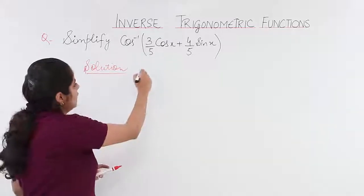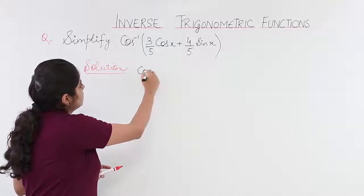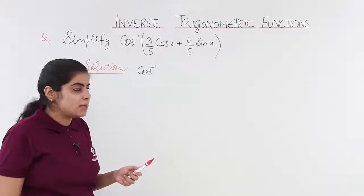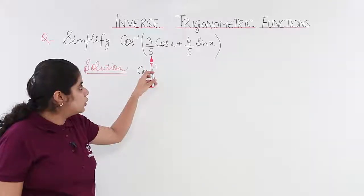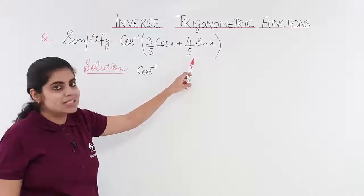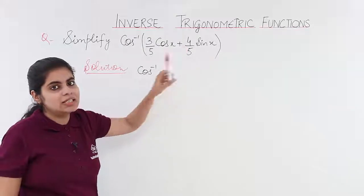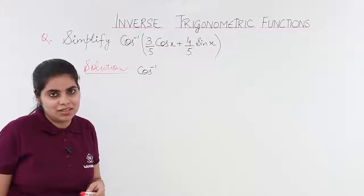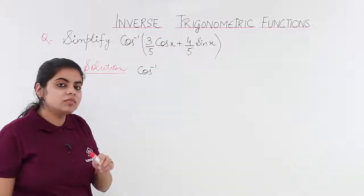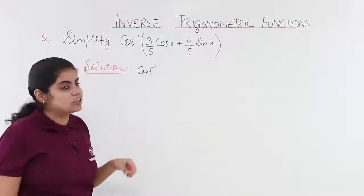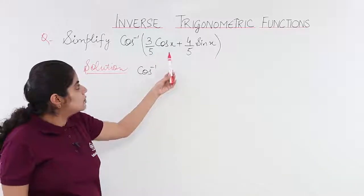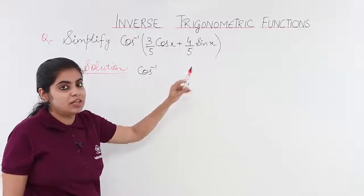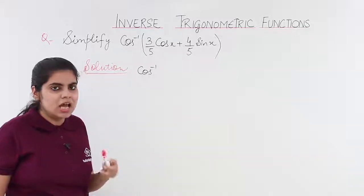It is cos inverse outside, and it will remain cos inverse outside. In these questions, I basically want the form cos a · cos b + sin a · sin b, so that I can use the formula for cos(a − b). If cos a = 3/5, cos b = cos x, sin a = 4/5, and sin b = sin x.